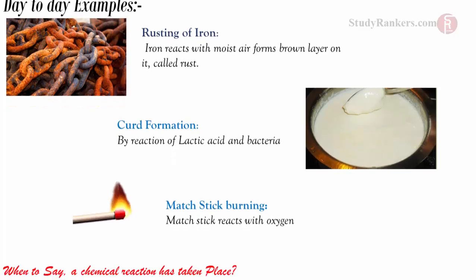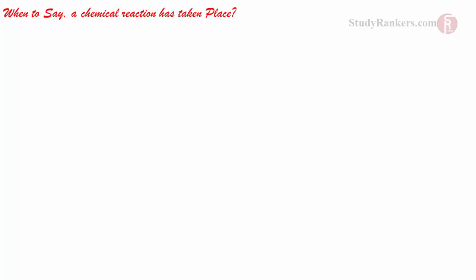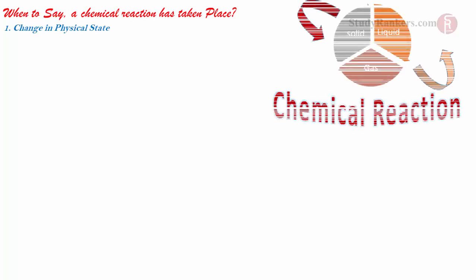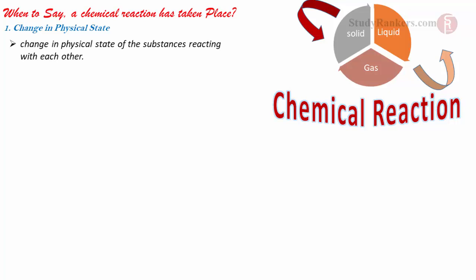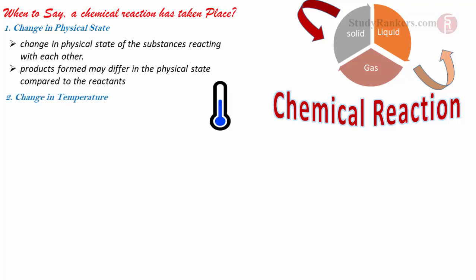There are certain indicators which indicate that a chemical reaction has taken place. First is change in physical state — there is a change in the physical state of the substances reacting with each other. The product formed may differ in physical state compared to the reactant. Next is change in temperature.